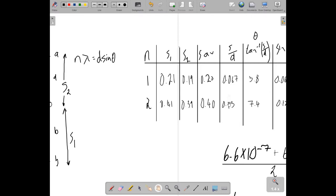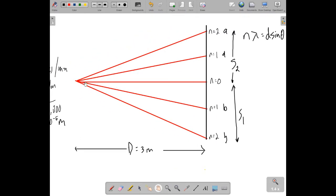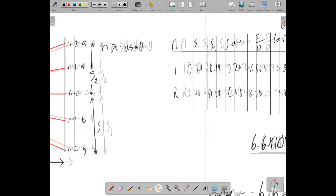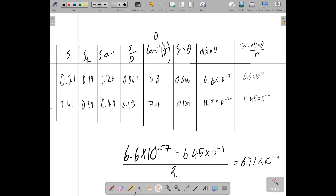Now, if I do S over D, my D - and I've just spotted a mistake in my table - my D is the capital D, which is the distance from the screen to the grating. So capital D, that's three metres. So 0.2 divided by 3 gives you 0.067, and 0.4 divided by 3 gives you 0.13. So now I've got S over D.